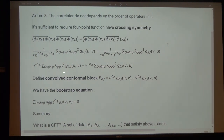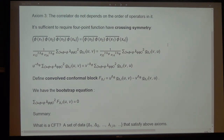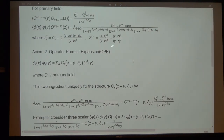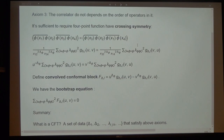Defining the conformal block, the crossing equation can be written in a compact form. The sum here is over all primary operators in the phi-phi OPE — it does not include the descendants. Why? Because the descendants are already included in the conformal block O. So in this summation, only primary fields appear, not descendants.